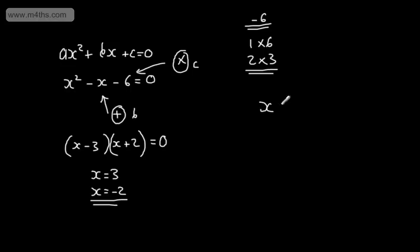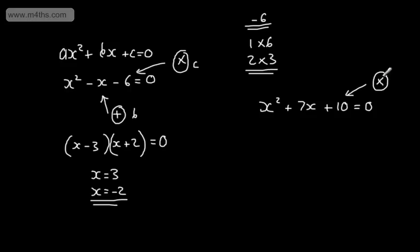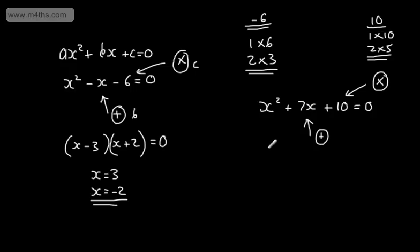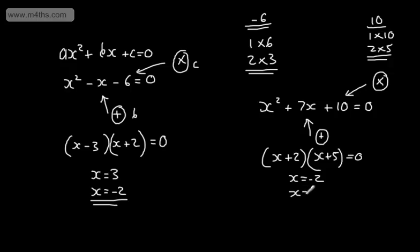Let's say we have x squared plus 7x plus 10, set equal to zero. We want two numbers that multiply to give positive 10 and add to give positive 7. We could have 1 times 10, or 2 times 5. Since the c term is positive, both numbers have the same sign. The pair 2 and 5 add to give 7, so we have x plus 2 multiplied by x plus 5 equals zero. Therefore x equals minus 2 or x equals minus 5 are the two possible solutions.